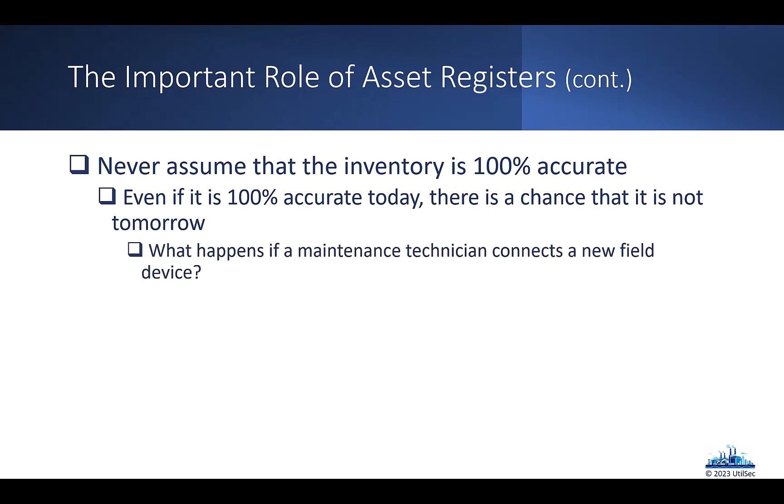I want to understand what happens when, say, a maintenance technician adds a new device into the environment. That new device comes with its own risk. We need to understand when something is connected to the network — even if it needs to be there — so we can help protect it, understand how it interacts with the rest of the environment, how it might impact operations, physical safety at the site, and cybersecurity. If a technician connected an asset to the network without appropriate authorization or change control processes, we definitely have an issue that needs to be addressed.